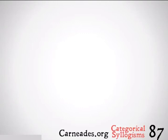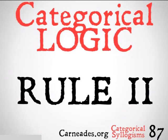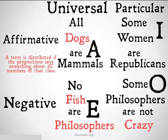Welcome back to 100 Days of Logic with 92nd Philosophy and Carnedis.org. Today we're going to be continuing with categorical logic and categorical syllogisms, looking at rule number two. This is the second rule of the five rules you need to learn in order to tell if any categorical syllogism is going to be valid or not. Let's take a look.